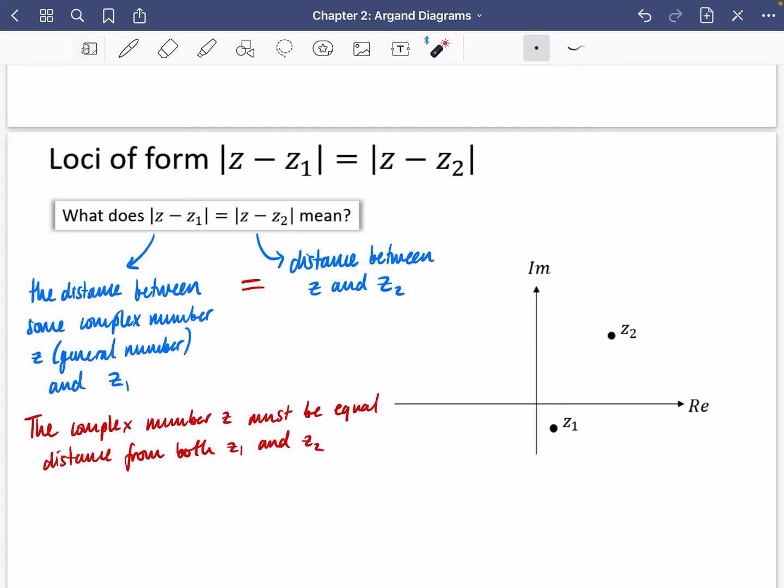That's what we're saying here. The distance between z and z1 must be the same as the distance between z and z2. In other words, z must be equal distance from z1 and z2, or equidistant.